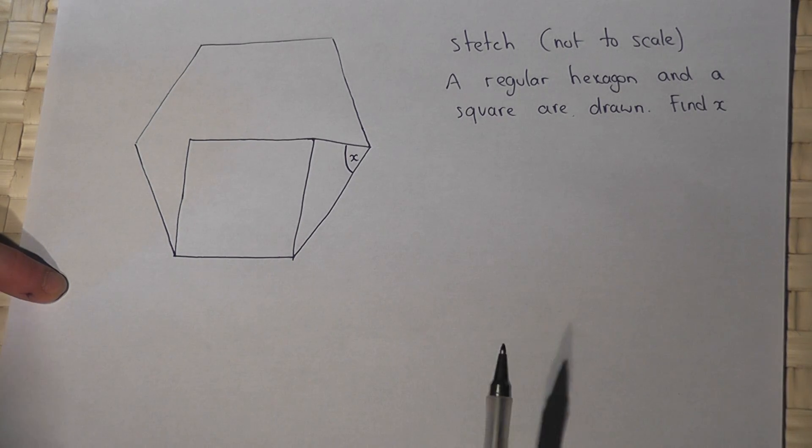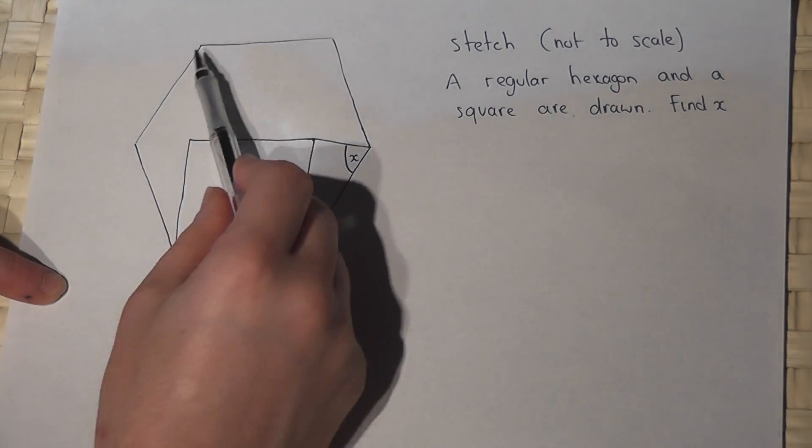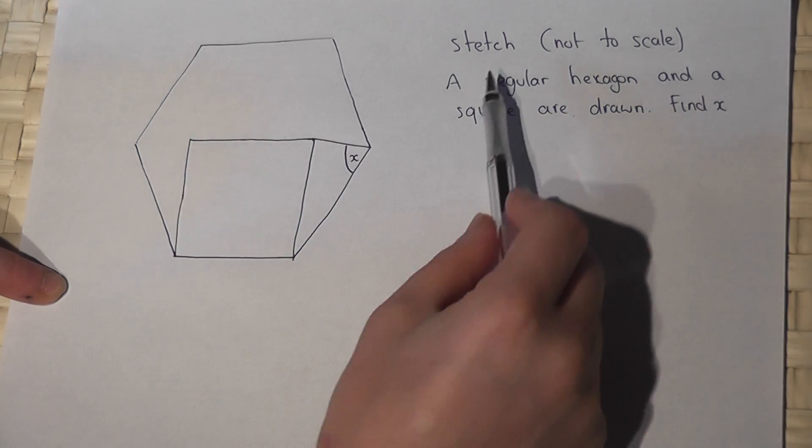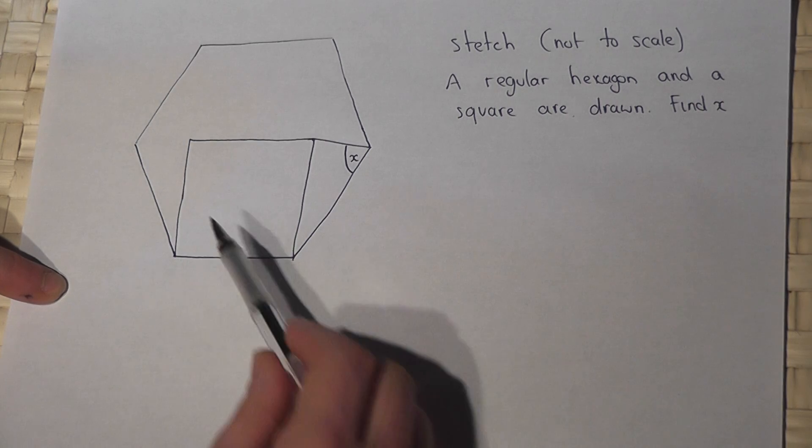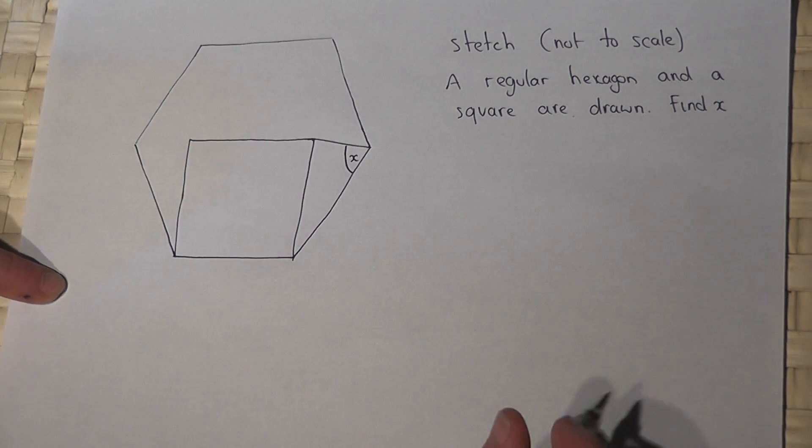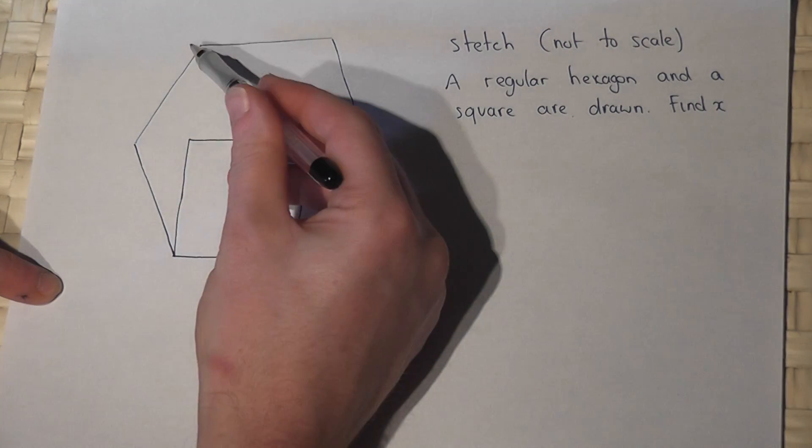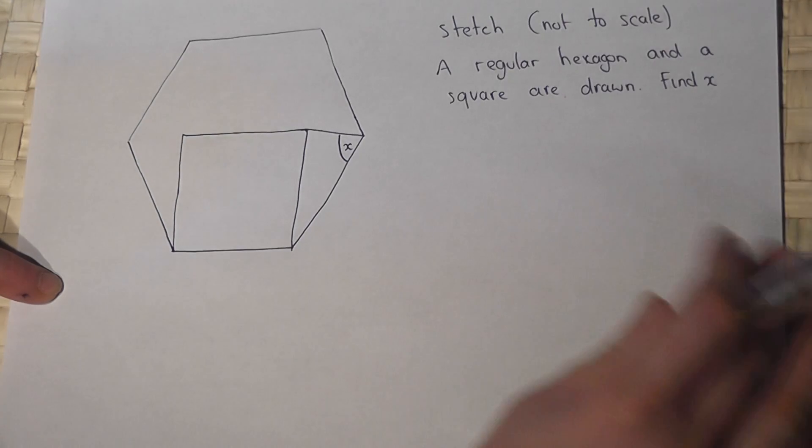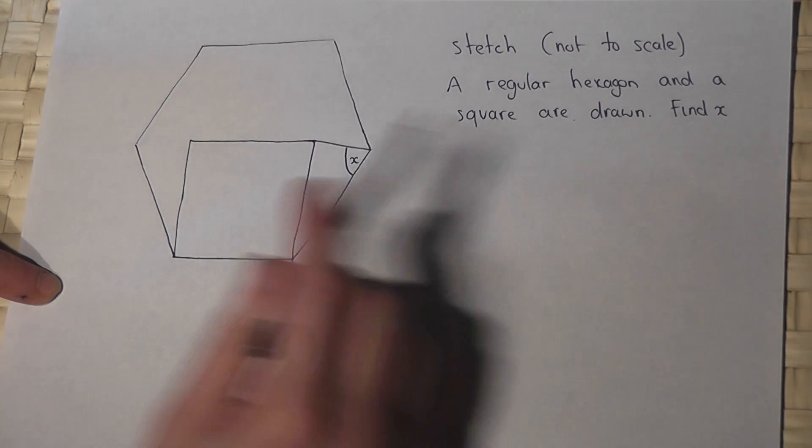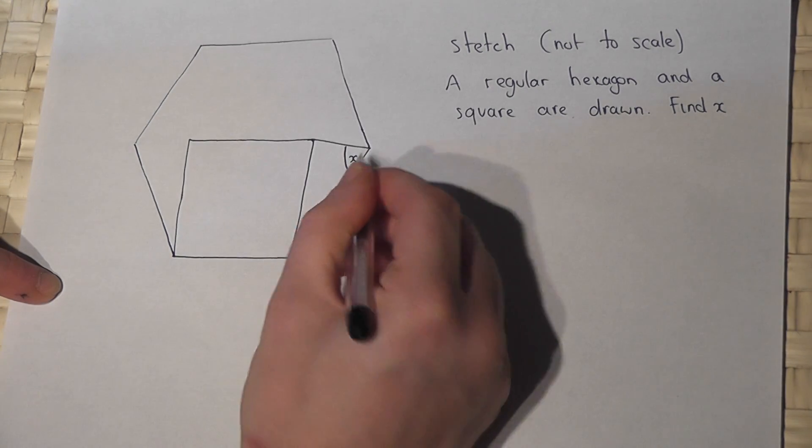This problem looks at actually quite a tricky problem involving angles. Now this is not drawn to scale at all, it's only a sketch and that's done so we can't just measure the angles or spot obvious symmetries without knowing what's going on in the actual diagram itself. Now we've got a regular hexagon, we've also got a square and the question is to find x.